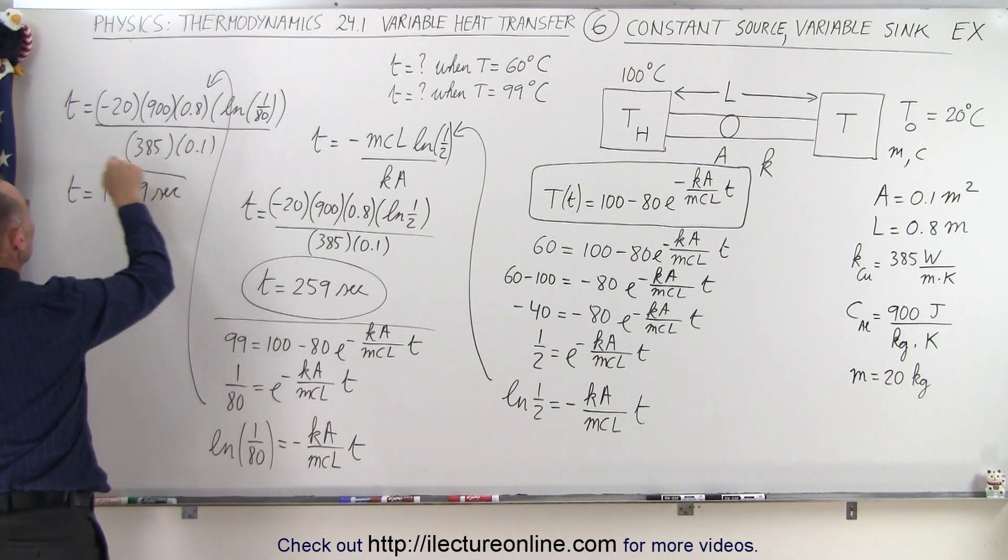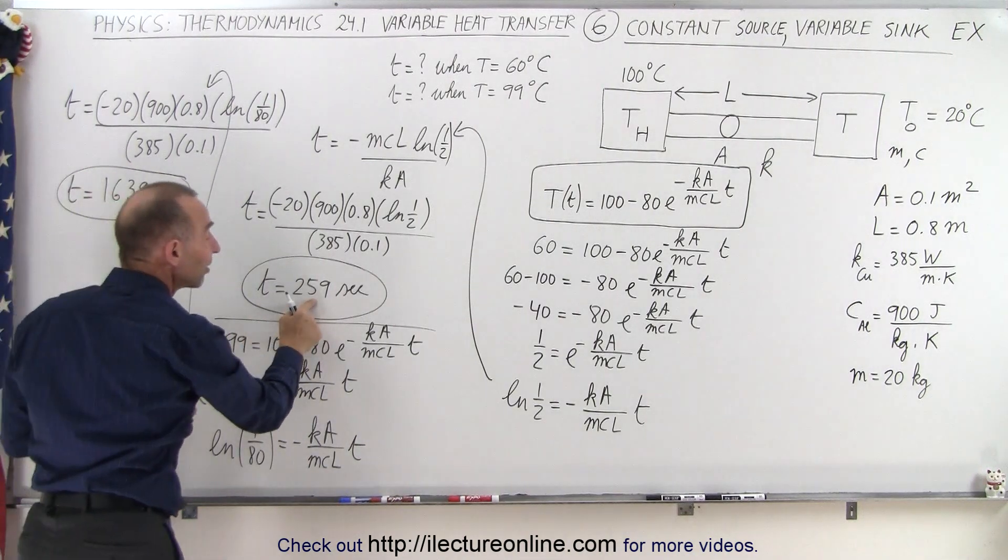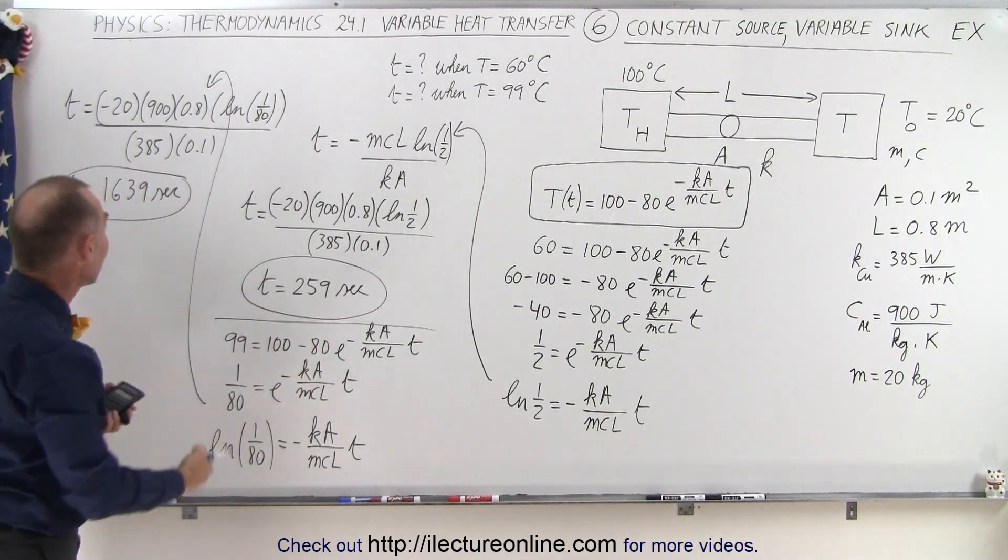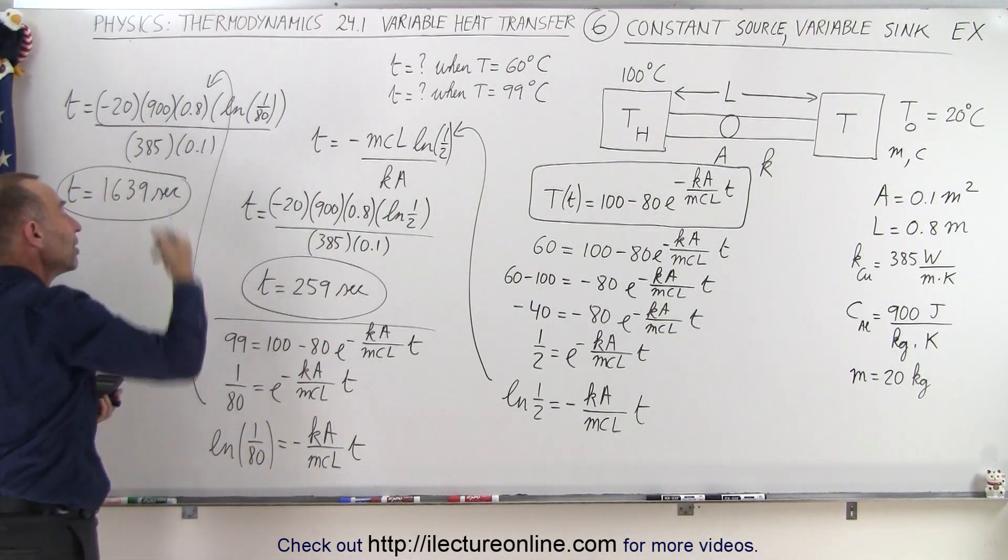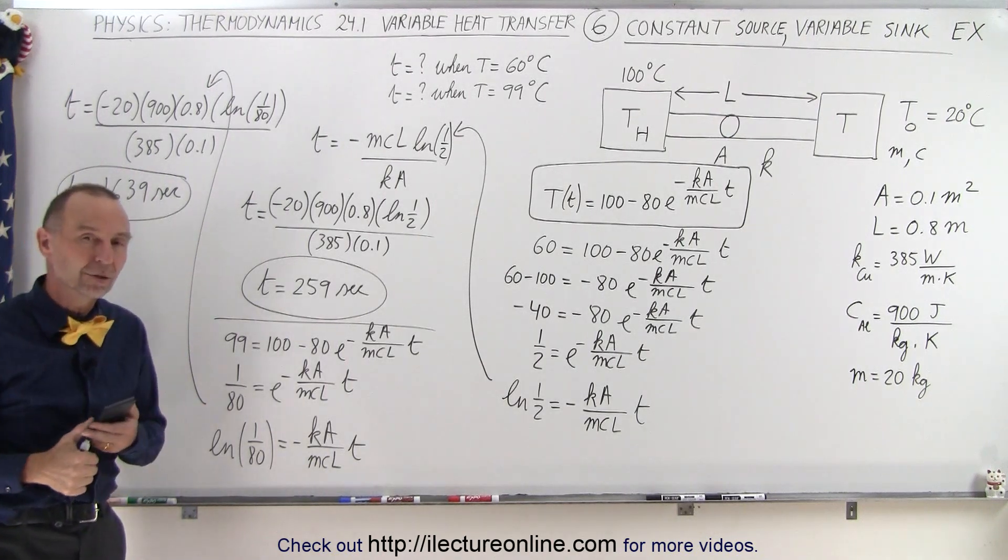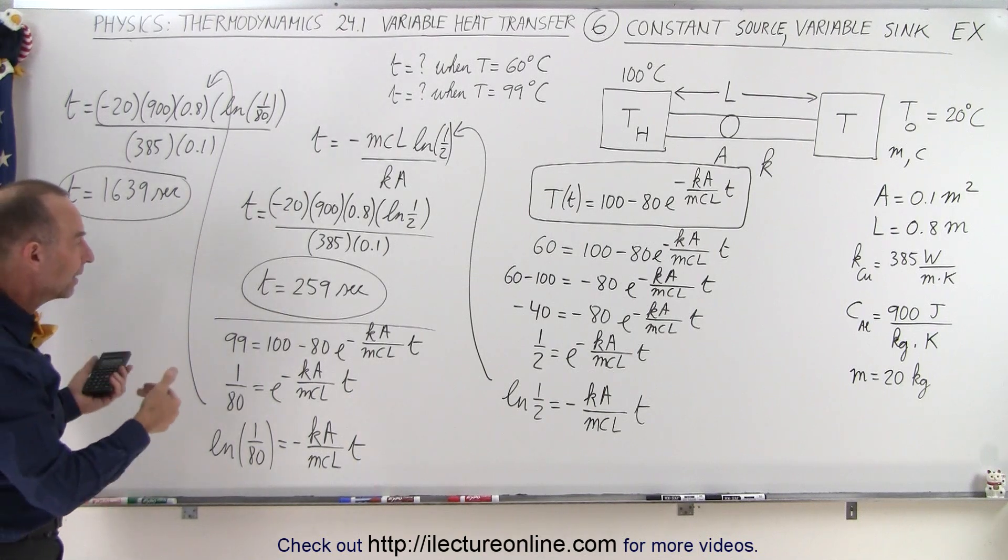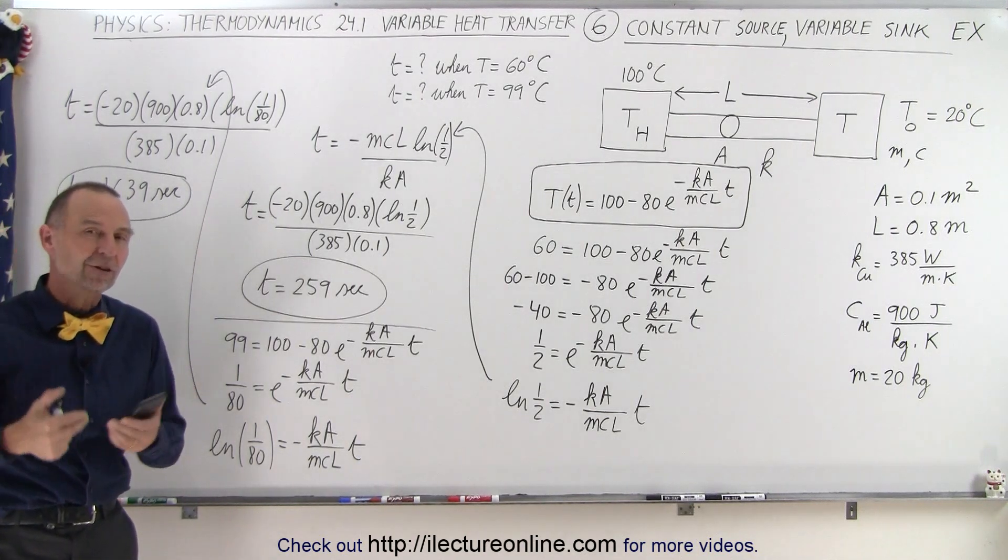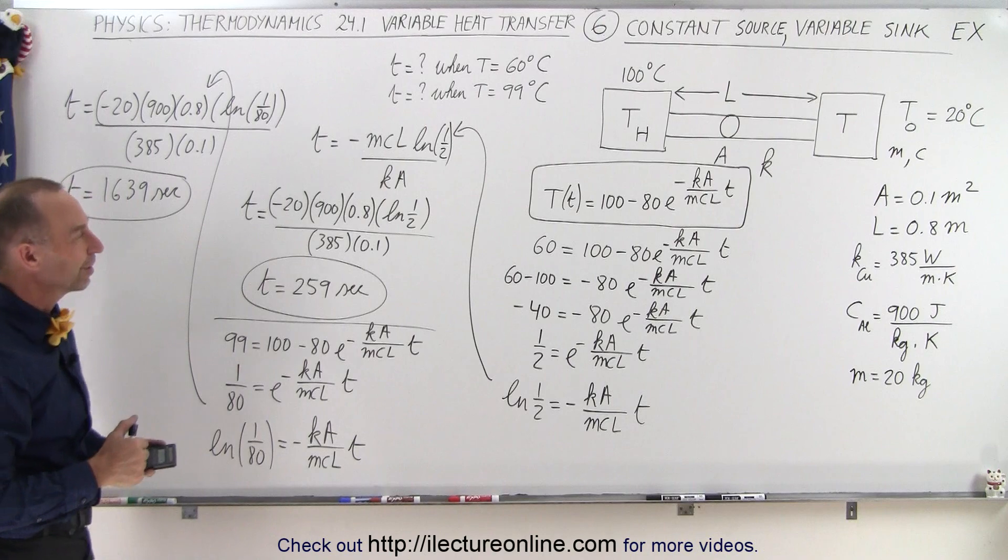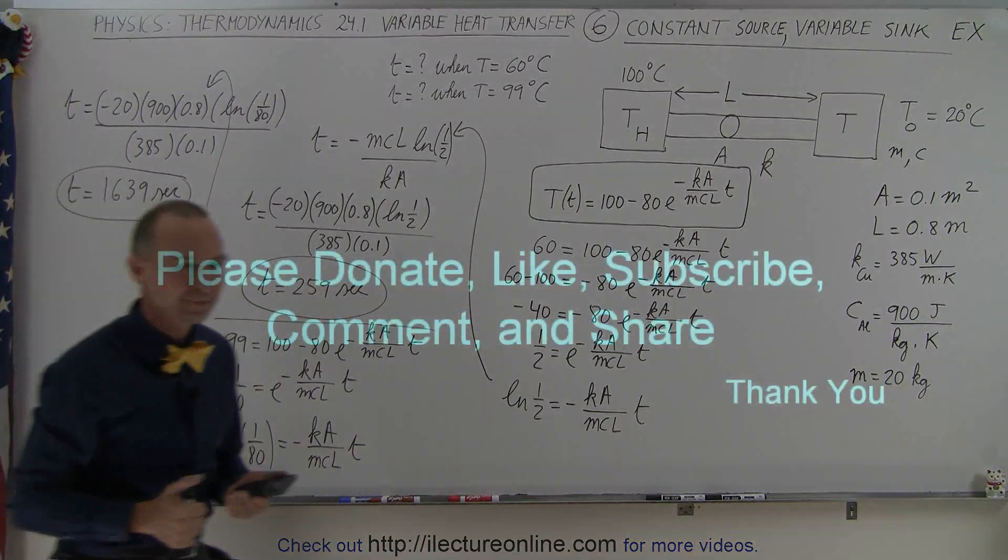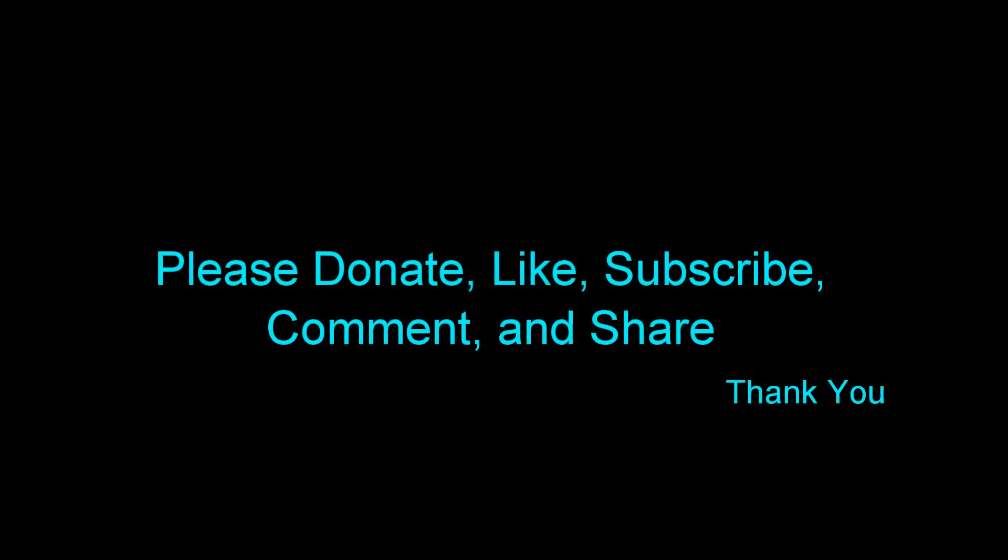So you can see that it only takes 259 seconds to reach the halfway point, and much longer to almost reach the full temperature of nearly 100 degrees centigrade, 99 degrees centigrade. But that's how we use an equation like that, and that's how we find the time for various temperatures. That's how it's done. Thank you.